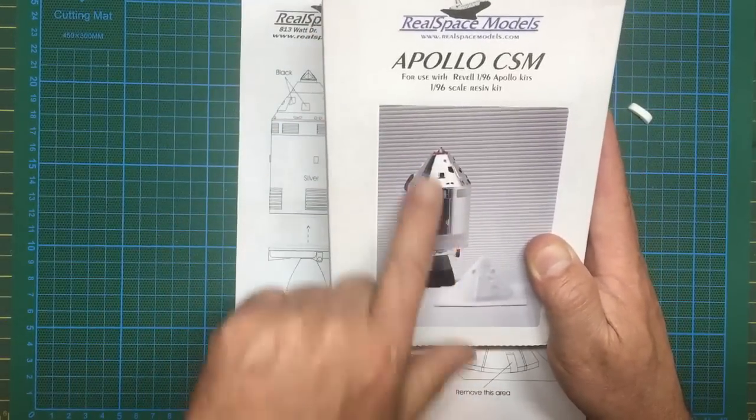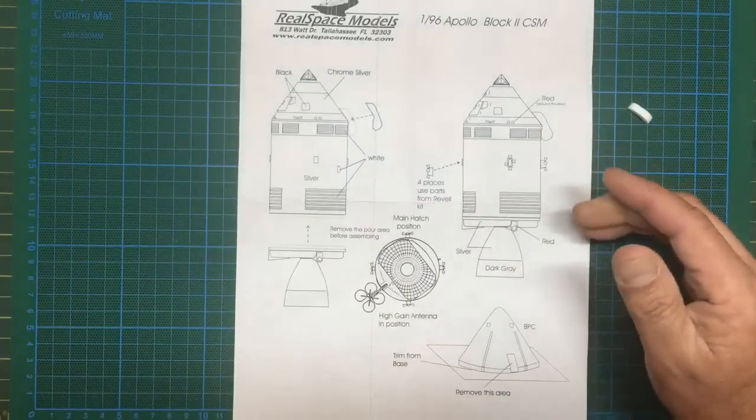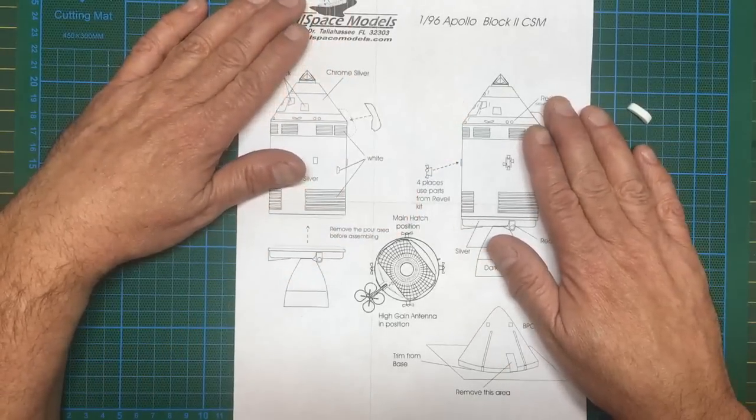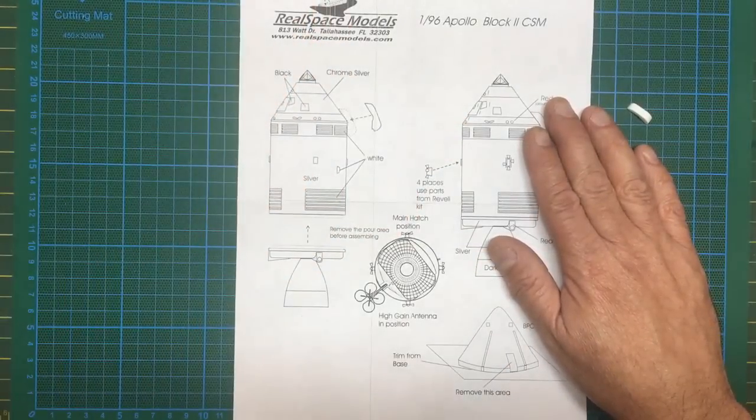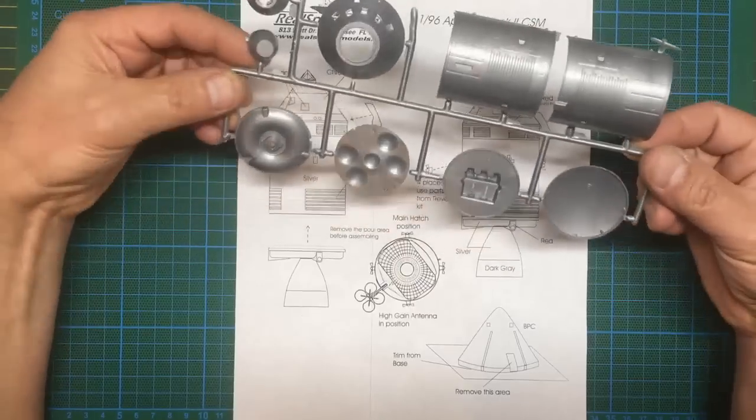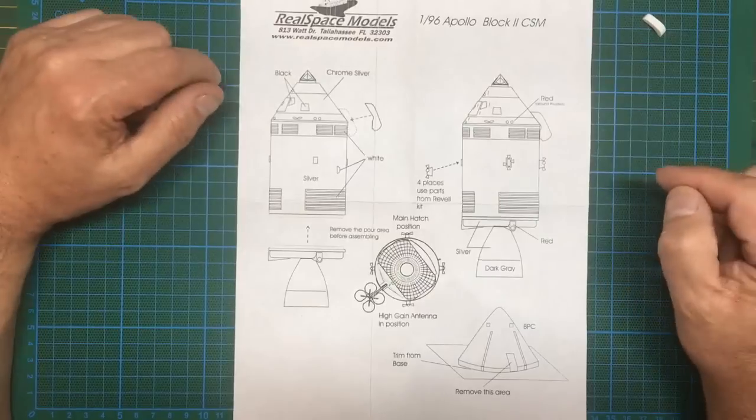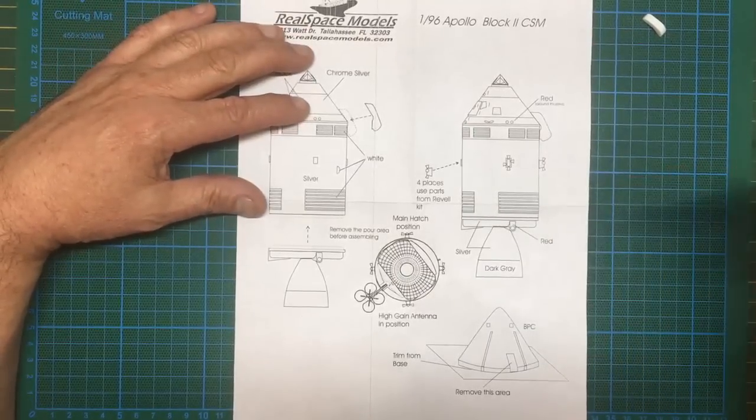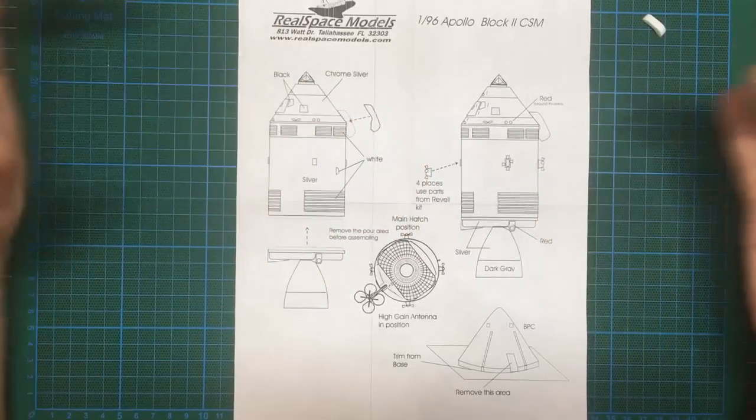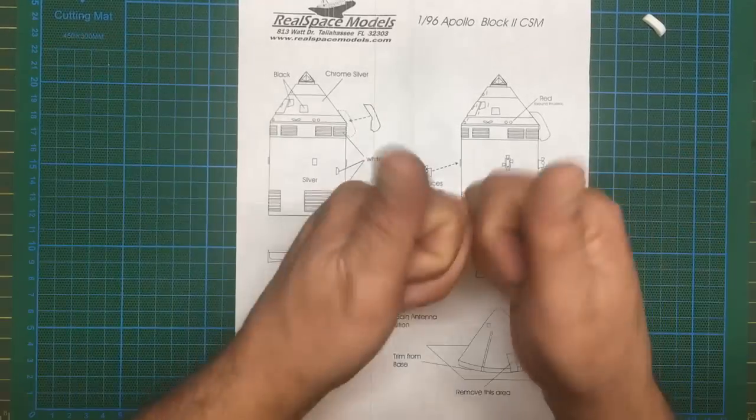There we go guys, that is the Real Space Models 1/96 Apollo CSM. You can see this is all done up in all the correct colors and everything. It's lovely. If you fancy one, drop me a line. If you're in the US or whatever, then go get yourself one, because that Revell kit in this area, these parts are just 100% wrong. There's no other way of putting it. Thanks for watching. If you've liked this, give me a like. If you want to subscribe, please subscribe. There's lots of space stuff and all sorts of other stuff on my channel as well. I do all sorts of genres. Thanks for watching, goodbye, happy modeling.